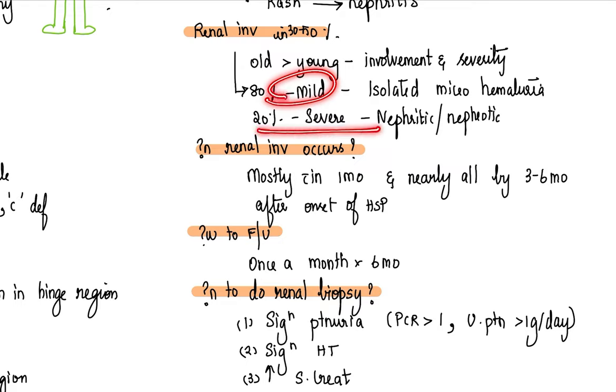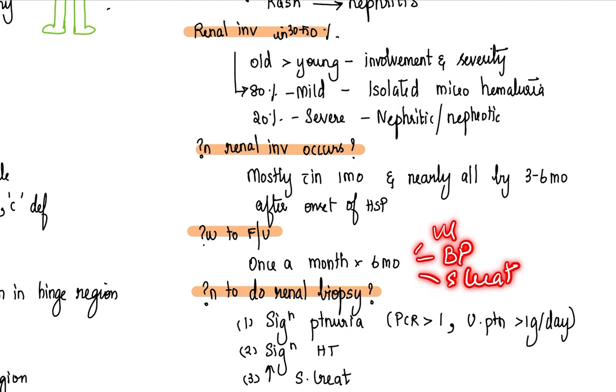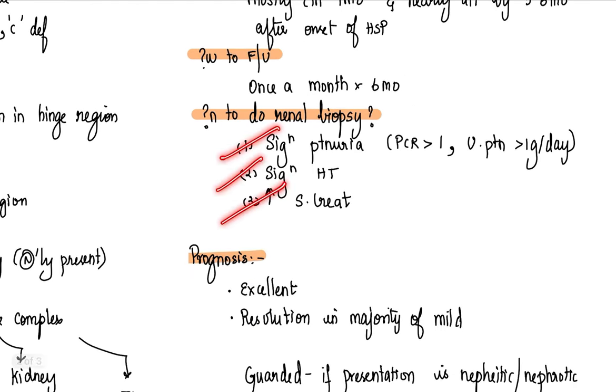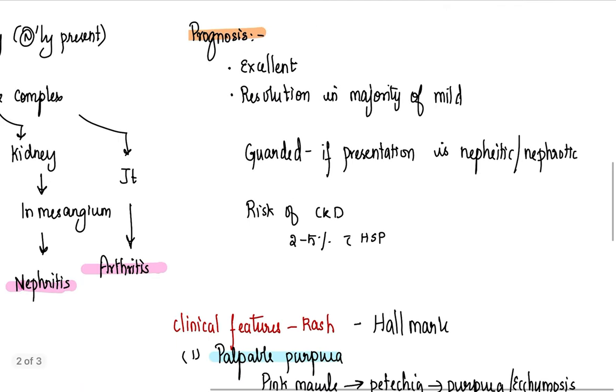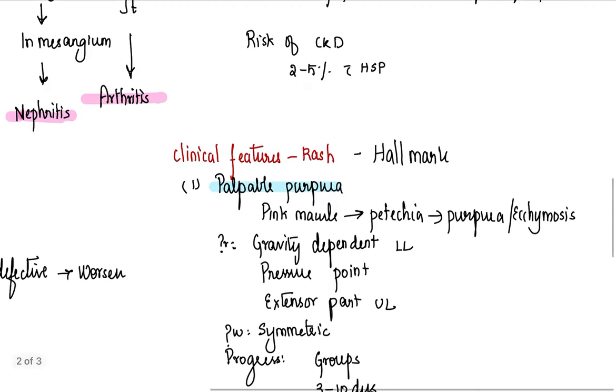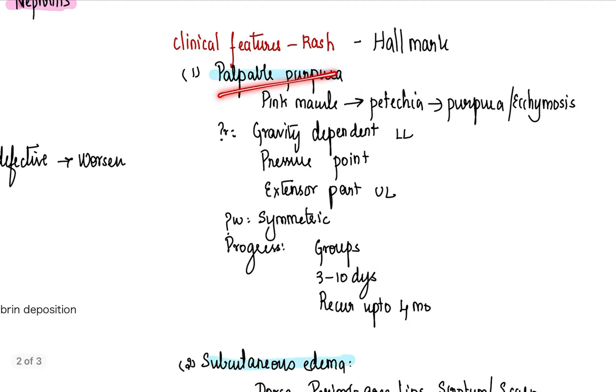Renal involvement follows rash in 30 to 50 percent. Most of the cases are mild. 20 percent is severe. And most of the cases occur within six months, so you will follow them up every month for six months doing a urine analysis, BP, and serum creatinine. You will do renal biopsy if there is significant proteinuria, hypertension, or serum creatinine increase. Prognosis is generally excellent with two to five percent risk for CKD.